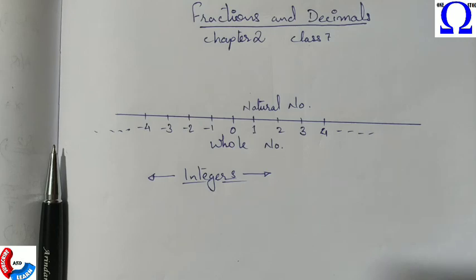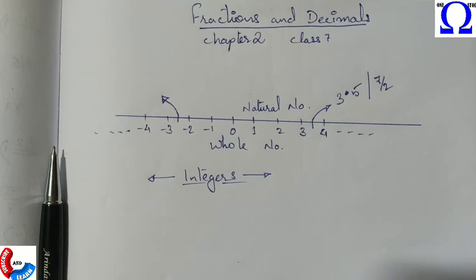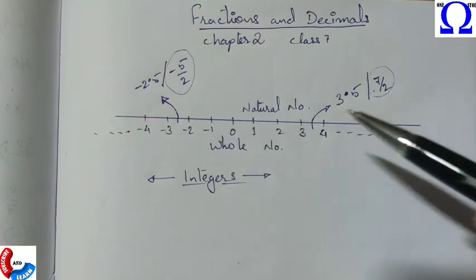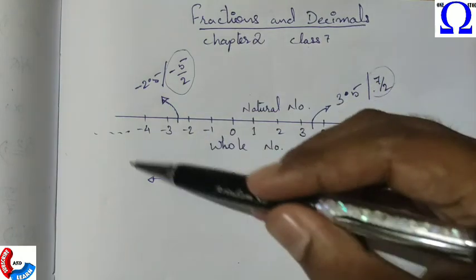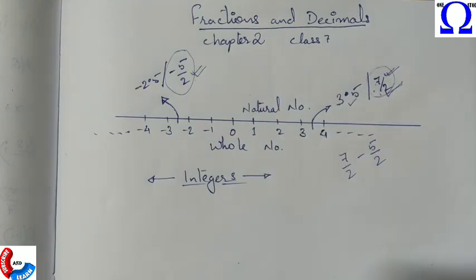In between these integers there are certain numbers, which we will be studying. For example, in between 3 and 4 we have 3.5, or we can say 7 by 2. So 3.5 is the decimal form and 7 by 2 is the fraction form. Similarly, between minus 2 and minus 3 we have minus 2.5 or minus 5 by 2. Every such number is called a rational number.